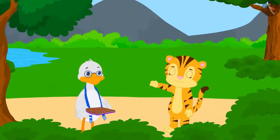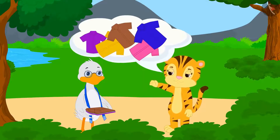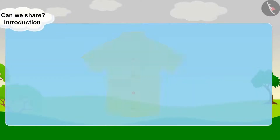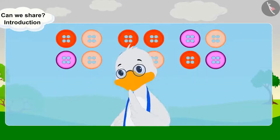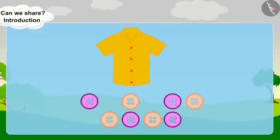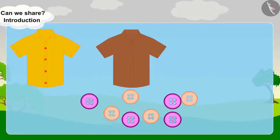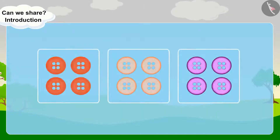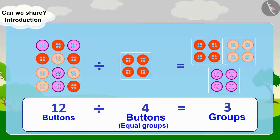Shere Khan's mother asked Barbole Tailor to make some shirts for Shere Khan's special friends. The tailor attaches 4 buttons to each shirt and he has 12 buttons. After putting 4 buttons on the first shirt, the tailor had 8 buttons left. After putting 4 on the second shirt, 4 are left. After putting 4 buttons on the third shirt, all the buttons are over. So 12 buttons were divided into 3 groups of 4.